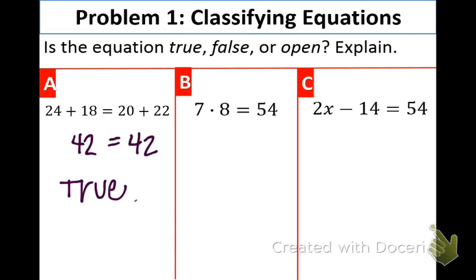Part B, 7 times 8 equals 54. What is 7 times 8? 56. Does 56 equal 54? No. So this is a false equation.